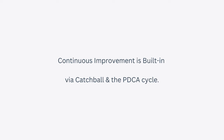Before we go through the Hoshin Planning process, be aware that it isn't just a top-down approach. It has two built-in feedback mechanisms to increase the model's effectiveness. These are Catchball and the PDCA cycle. So let's take a quick look at each.